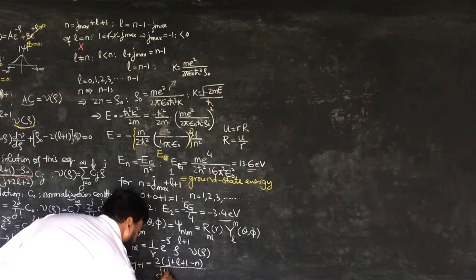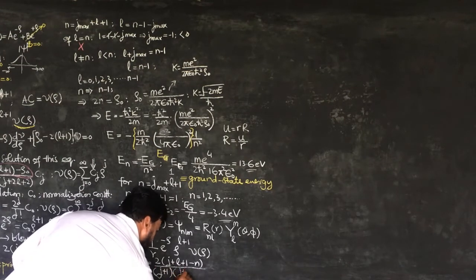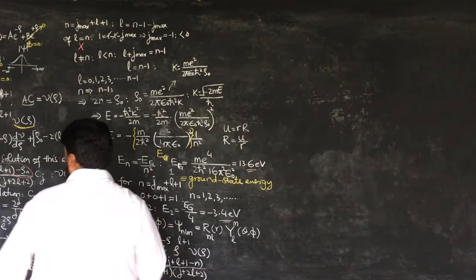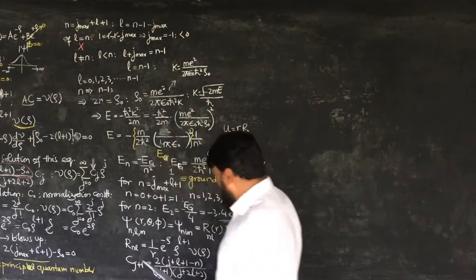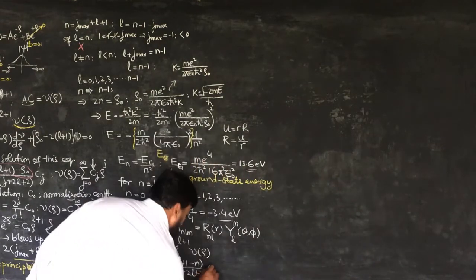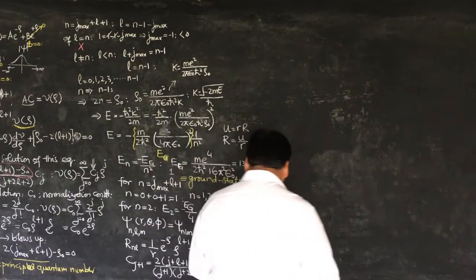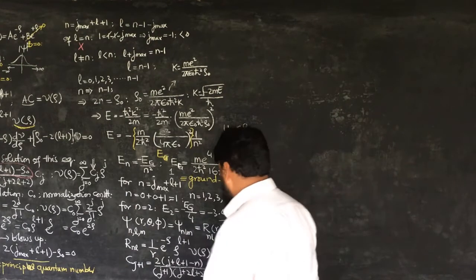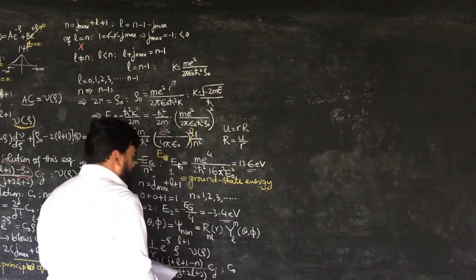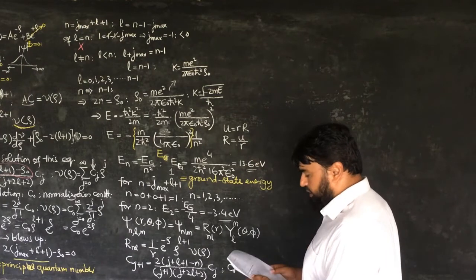I have written this recursion relation — (j+1)(j+2)(l+2) — in terms of n, and this whole expression is multiplied with c_j. Now I will have to determine the normalization constant c₀. If I find c₀ I can find the rest of all the values.